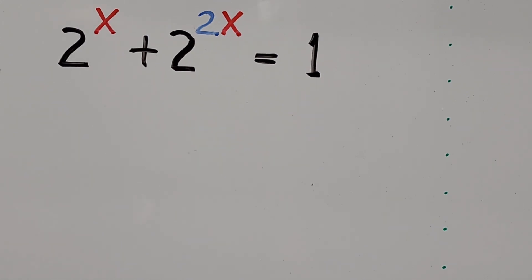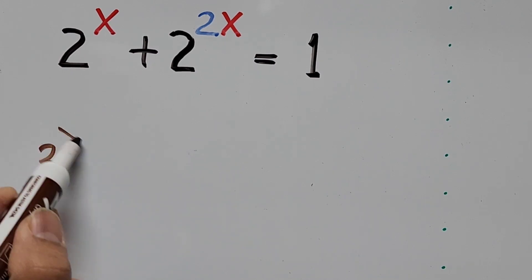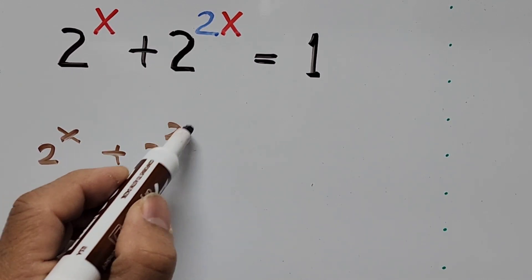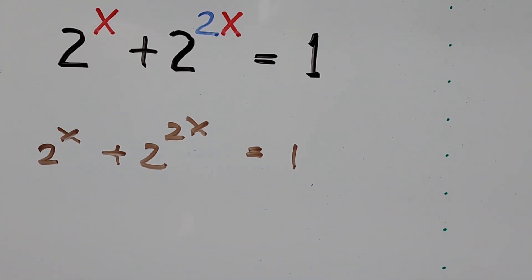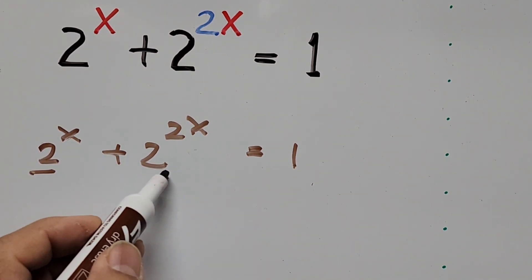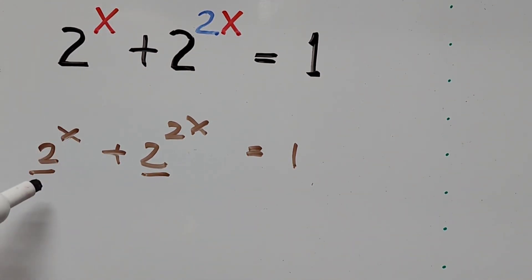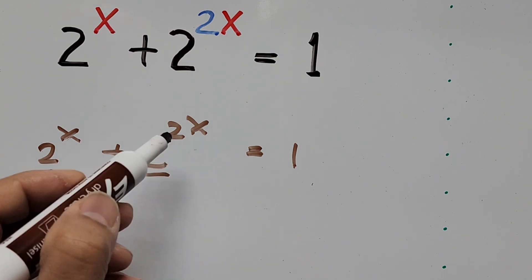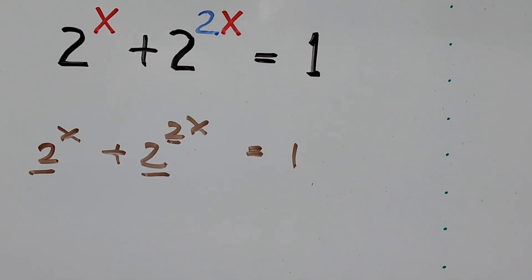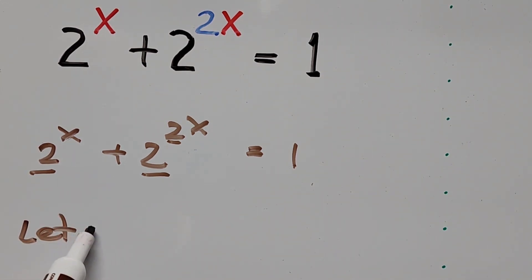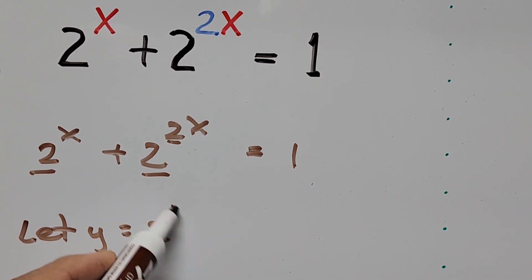Alright, so let's do that. We're introducing a new variable to represent 2 to the power of x, since these have the same base. The only difference is the multiple of 2 — the coefficient of the exponent x. So let's define the new variable as y. Let y equal 2 to the power of x.